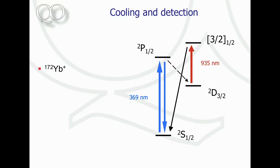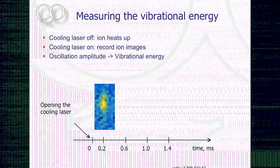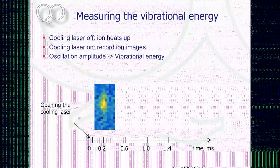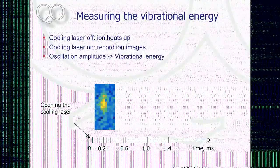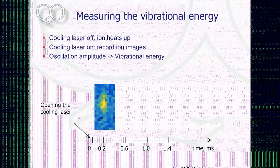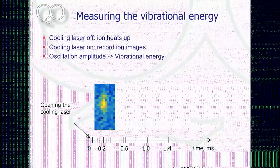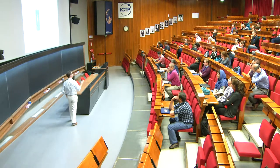We drive an electric dipole transition where we cool and detect fluorescence, with a repump laser that keeps the ion in a closed cycle. To measure the heating rate, we turn off the cooling laser, the ion starts to heat up, then at some point we open the cooling laser again and observe the spatial extension of the ion in its harmonic trapping potential. We vary the time during which we let the ion heat up.